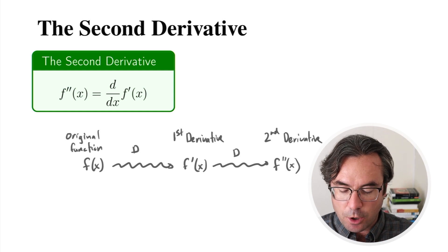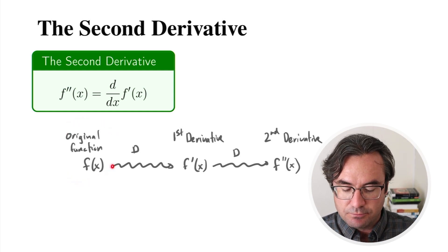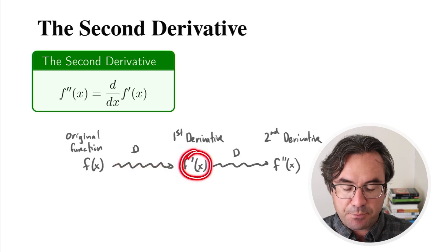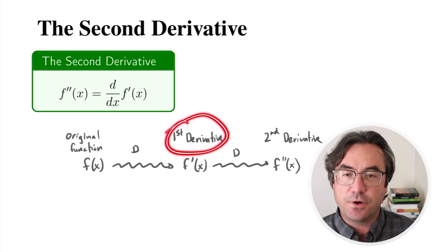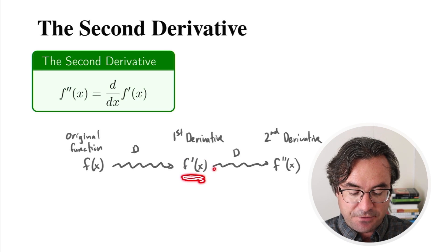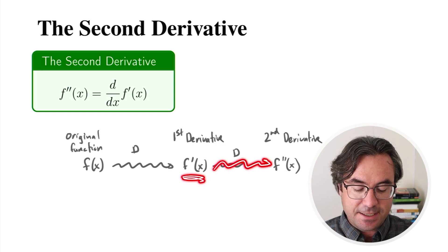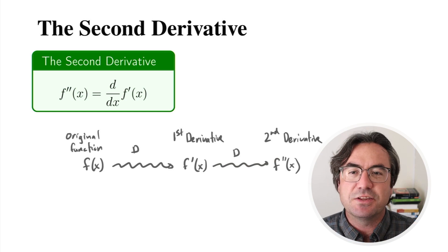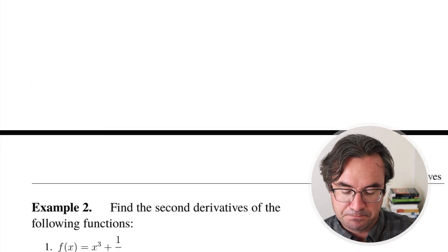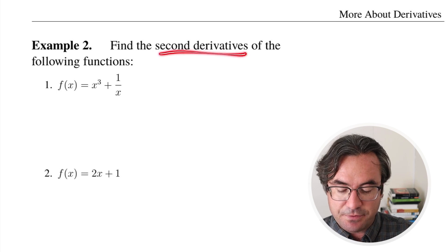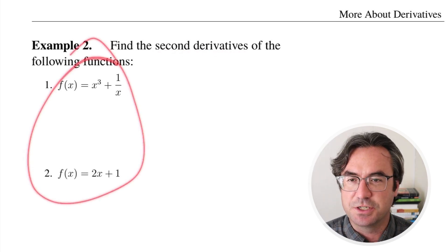So we start with our original function f, do some work, differentiate it, and we get f prime of x — a brand new function called the first derivative. Then we take that brand new function, differentiate that, and we get our second derivative. Let's try a couple of examples. We're going to find the second derivative of these two functions.